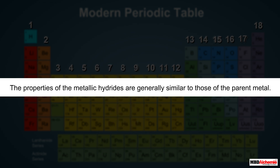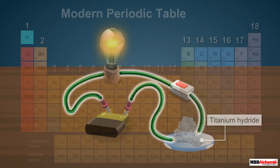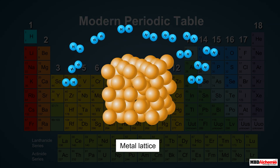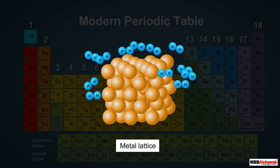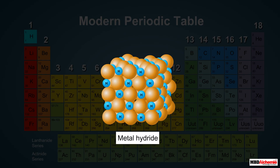The properties of metallic hydrides are generally similar to those of the parent metal — for example, they conduct heat and electricity like their parent metal, although not as efficiently. It was earlier believed that hydrogen, being small in size, occupies the interstices or spaces in the metal lattice, thereby forming metal hydrides. Therefore, these hydrides were also named interstitial hydrides.